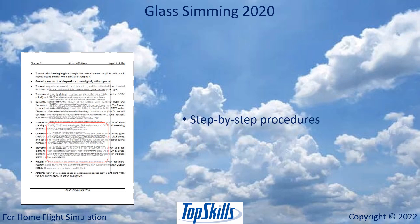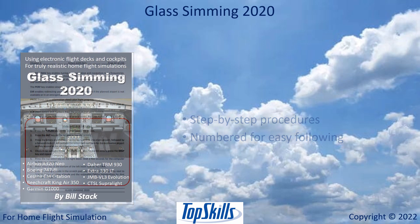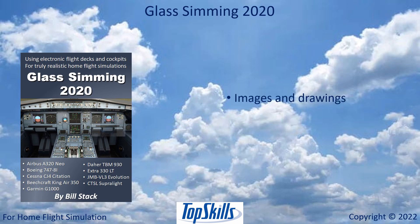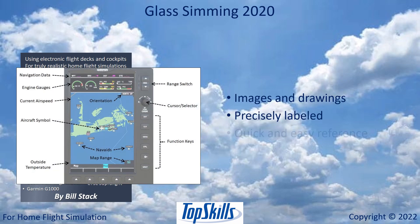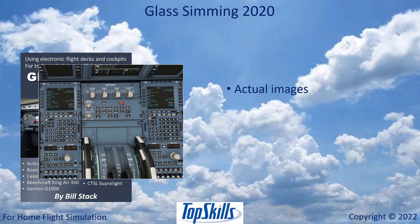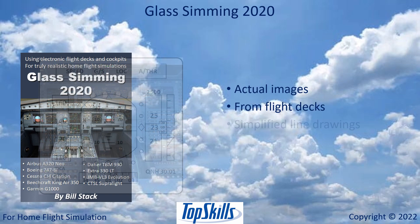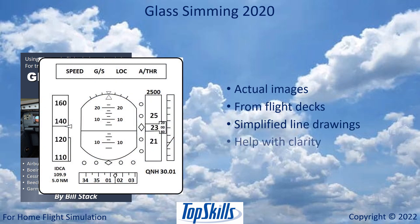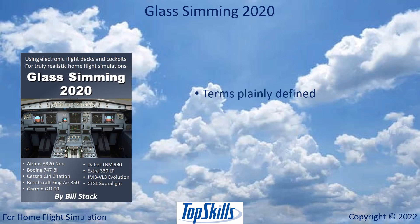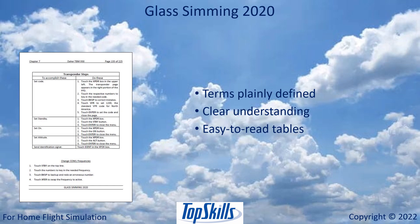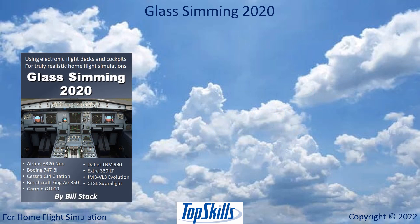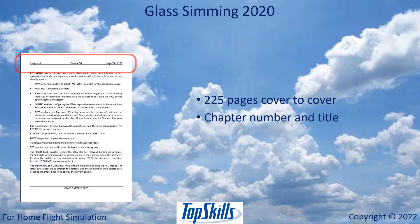Step-by-step procedures are numbered for easy following. Images and drawings are precisely labeled for quick and easy reference. Actual images are taken from the flight decks. Simplified line drawings help with clarity. Terms are plainly defined for clear understanding. Easy-to-read tables present quick step procedures. The book is 225 pages from cover to cover. Every page has a header with chapter number and title so you always know which aircraft you are reading about.